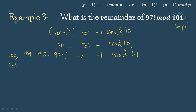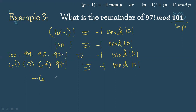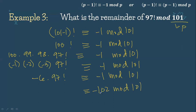So: 100 minus 101 is negative 1; 99 minus 101 is negative 2; 98 minus 101 is negative 3; 97 factorial is congruent to negative 1 mod 101. Negative 1 times negative 2 is 2; 2 times negative 3 is negative 6. So negative 6 times 97 factorial is congruent to negative 1 mod 101. It's more strategic to subtract: negative 1 minus 101 gives negative 102 mod 101, which is equivalent to negative 1 mod 101.